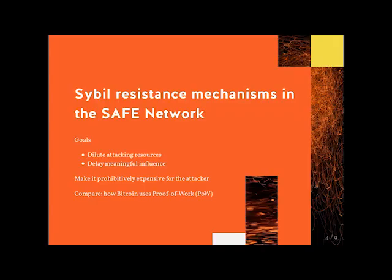The SAFE network has a number of ways to defend against Sybil attacks. The goal of them is to dilute the attacker's resources and delay the attacker's ability to gain meaningful influence. Fundamentally it boils down to making it prohibitively expensive for the attacker, both in time and resources spent.